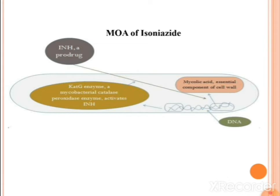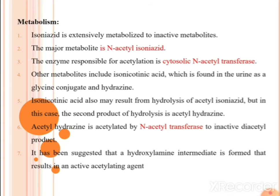A pictorial diagram of the mechanism of action of isoniazide is shown. The basic surface of mycobacteria is depicted with mycolic acid as an essential component of the cell wall. The KatG enzyme (mycobacterial catalase-peroxidase) is present on the surface and activates the isoniazide prodrug, converting it into isonicotinic acid, which then inhibits mycolic acid in the bacterial cell wall.